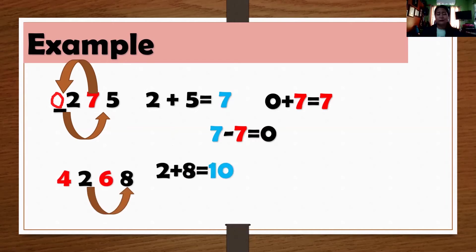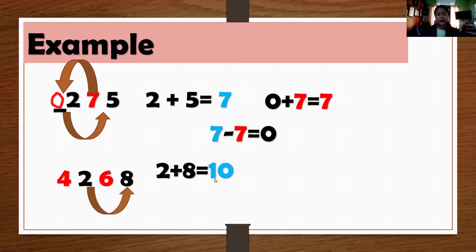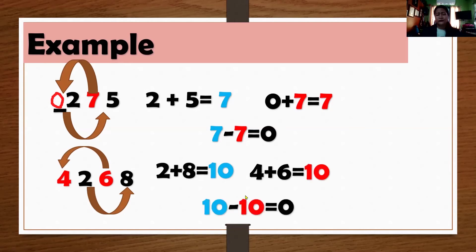Another example, I have here 4,268. The two alternating numbers are 2 and 8. So 2 plus 8 is 10. Now another pair is 6 plus 4 is 10 also. When we subtract them, the answer is 0. That's why this is divisible by 11.